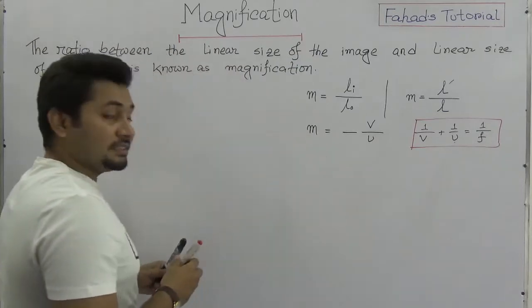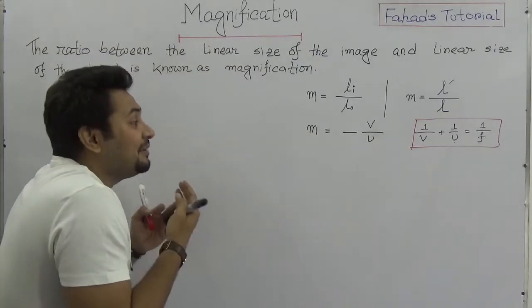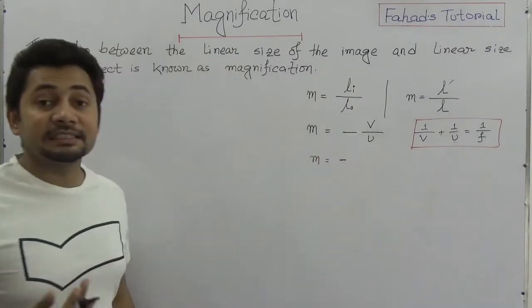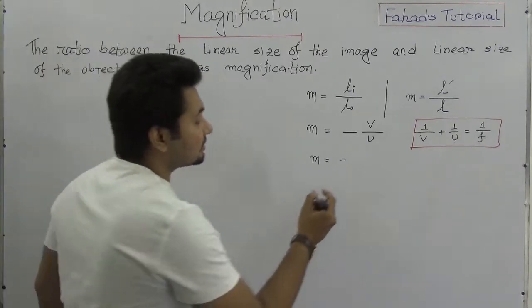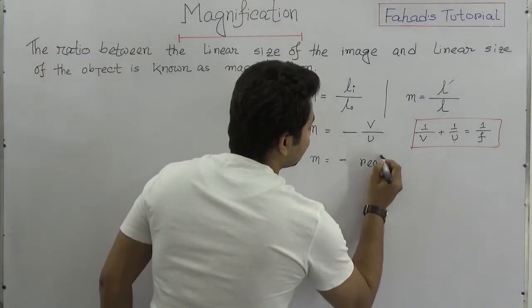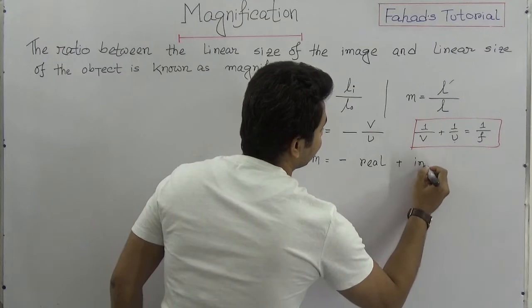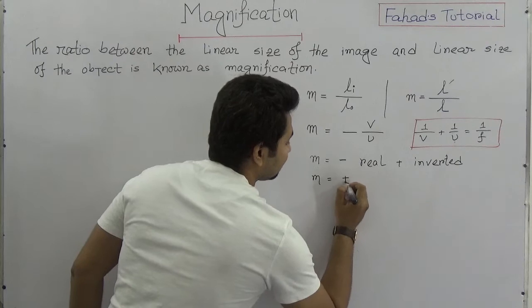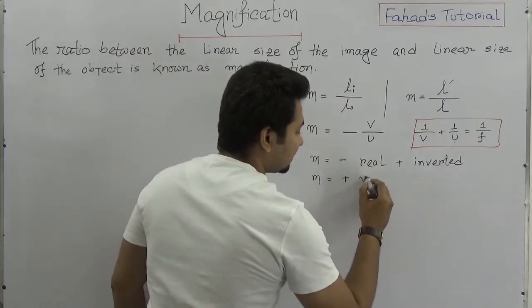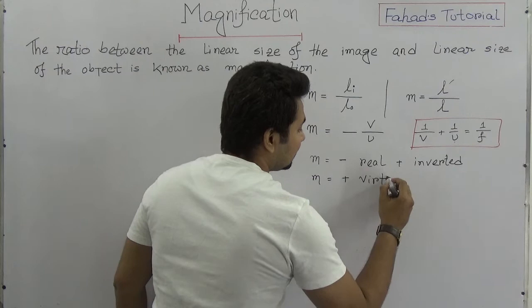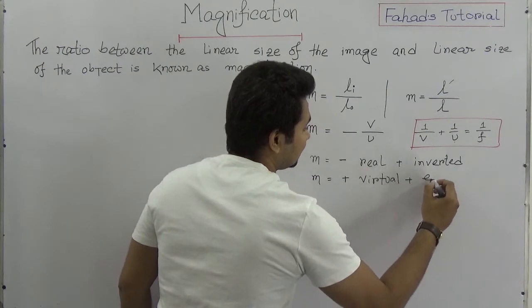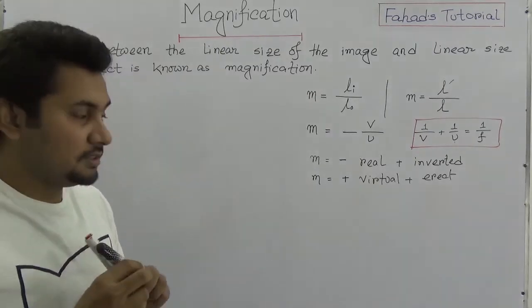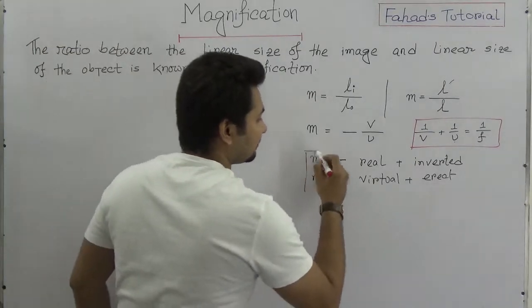If the value of M is negative, then the image is real and inverted. If the value of M is positive, then the image is virtual and erect.